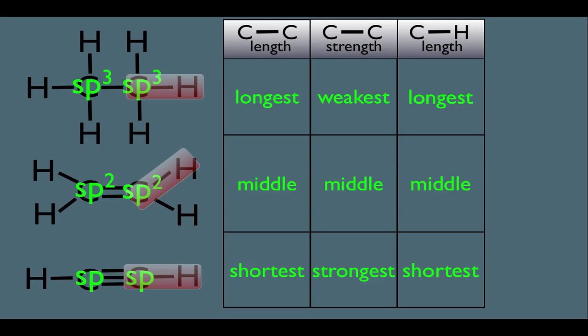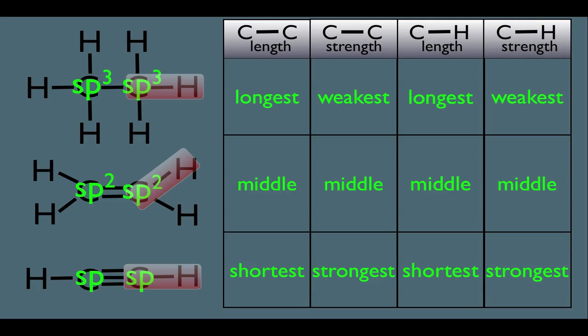And the same thing could be said about the relative strengths of the carbon-hydrogen bonds. Again, the bottom molecule with its sp hybridized carbon would have more overlap than the s orbital of the hydrogen, making his C-H bond the strongest bond.